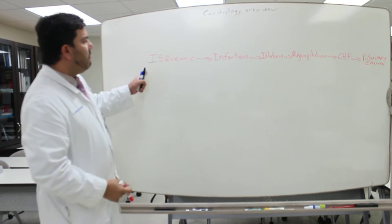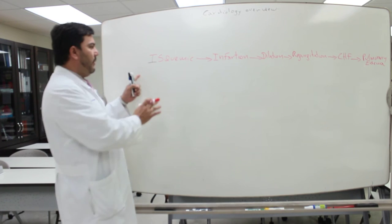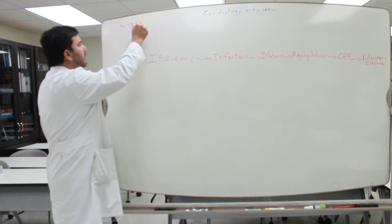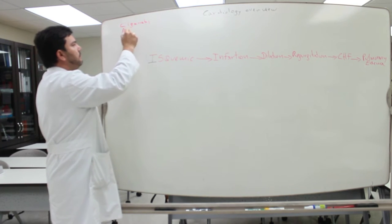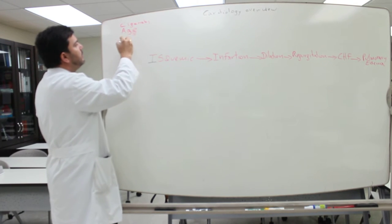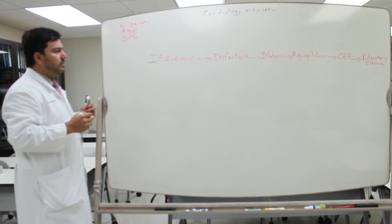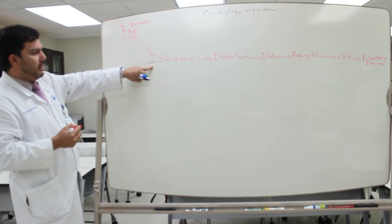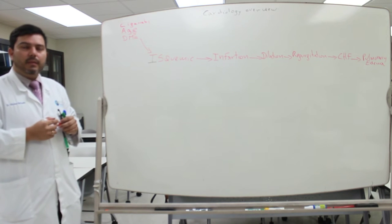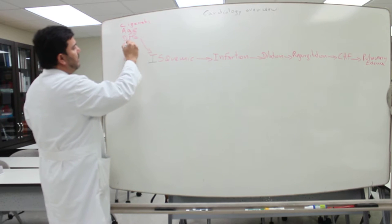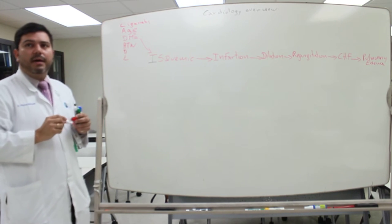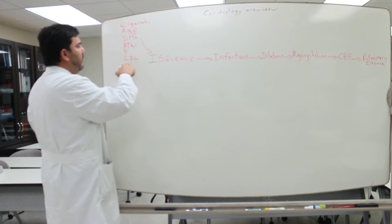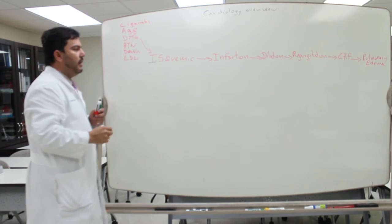When they start asking questions, they can give you a patient with any of these conditions, but remember everything starts with ischemia. One of the things that will lead to ischemia is cigarette smoking. Age is also a risk factor, as is diabetes mellitus — a direct risk factor. Coronary artery disease will give you ischemia at some point. Hypertension is another risk factor, along with high LDL and early death of a family member.